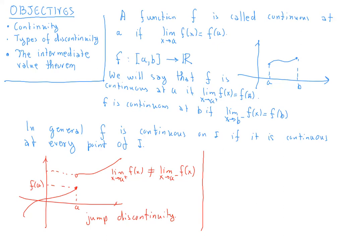In general, f is continuous at a — assuming it's defined on both sides of a — if and only if the limit as x tends to a from the right of f of x equals the limit as x tends to a from the left of f of x, and that equals f of a.